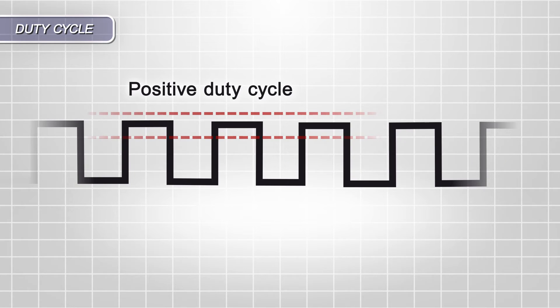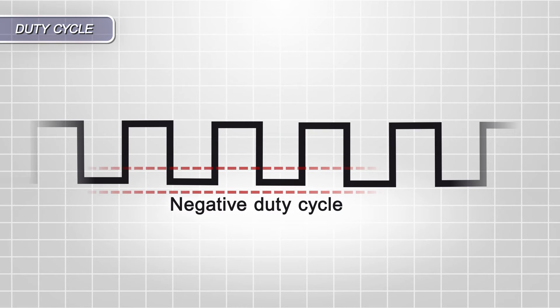A positive duty cycle is held to ground and pulled high to activate, whereas a negative duty cycle is held high and pulled to ground to activate.